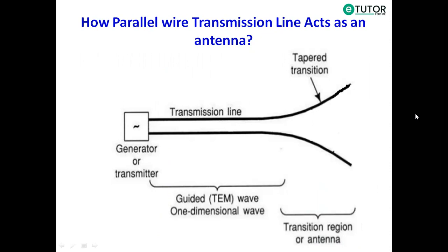Here we have considered a parallel wire transmission line in which two conductors are parallel to each other. At one end of this transmission line, we have connected a generator which will transmit a time-varying AC signal inside this transmission line. The other end is tapered or flared to create an antenna region or a transition region. In between, this part of the transmission line will act as a guided TEM wave medium.